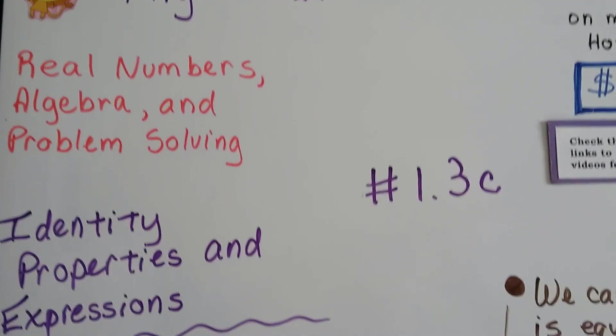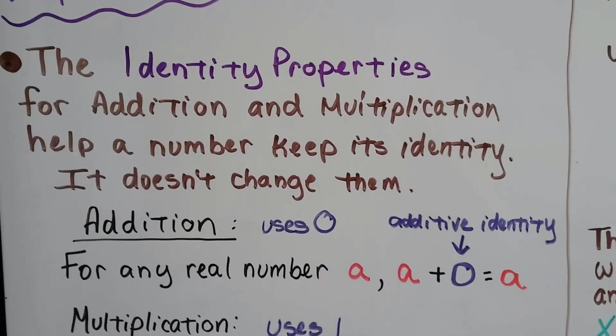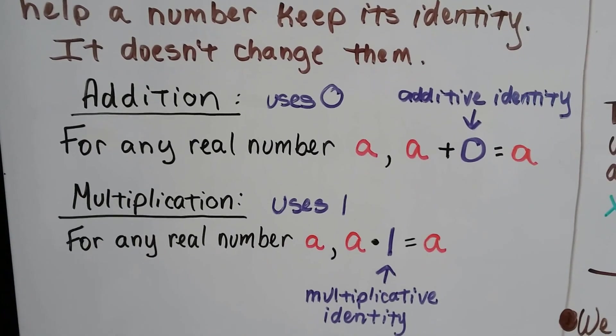Algebra 2 1.3c, Identity Properties and Expressions. The identity properties for addition and multiplication help a number keep its identity. It doesn't change them.